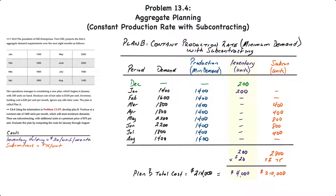Looking at our totals, for inventory holding costs we only have 200 units over the entire eight-month period, and that was in January. Be careful not to include the green December ending inventory in the calculation. Multiplying 200 units by the $20 holding cost gives $4,000 in inventory holding costs over the eight-month period. For subcontracting, when we add up all the subcontracted units required, that's 2,800 units at a cost of $75 per unit, for a total of $210,000. Therefore, the total cost for Plan B is $214,000.